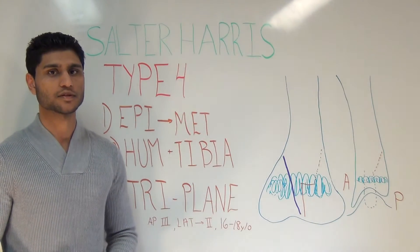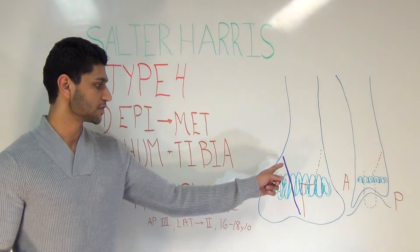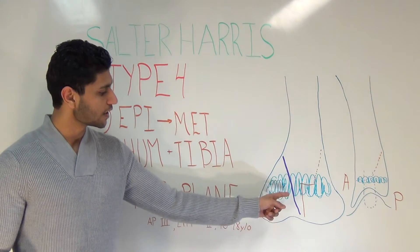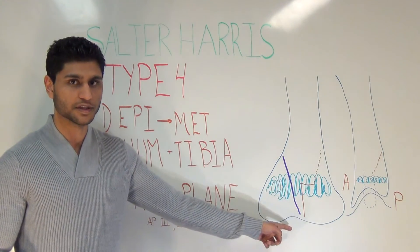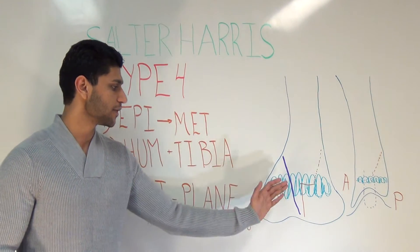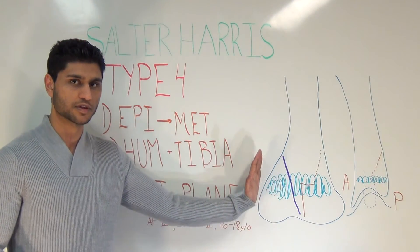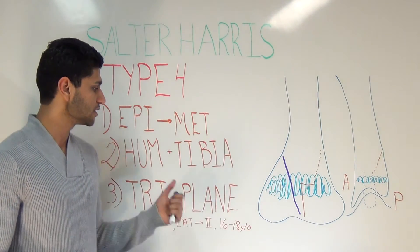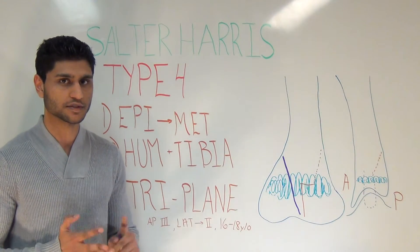A type 4 is a vertical fracture that extends from the metaphysis through the epiphyseal plate, and then exits out of the epiphysis, making these intra-articular. You can imagine that the entire piece is just broken off the remainder of the bone. These tend to occur in the humerus and the tibia.